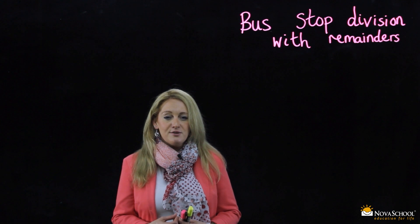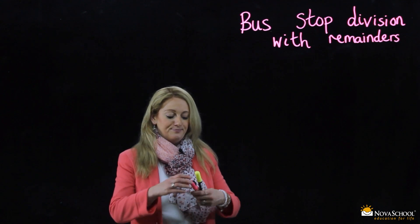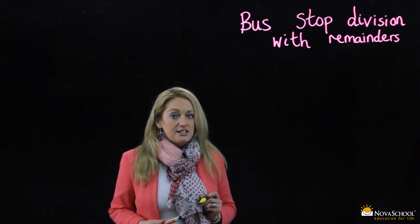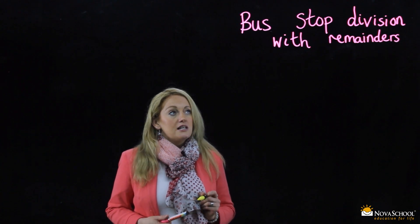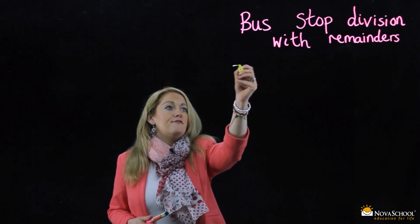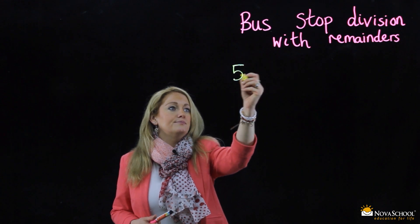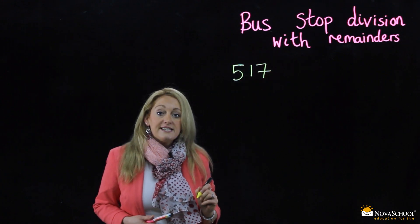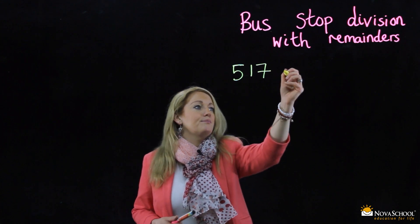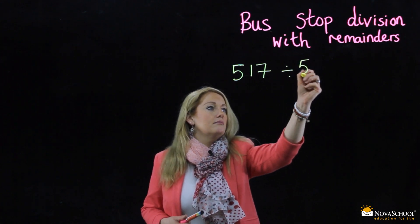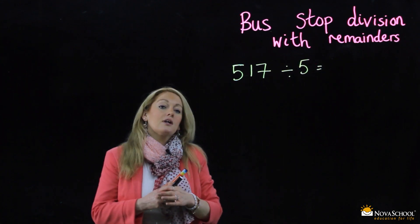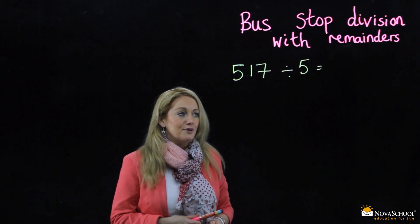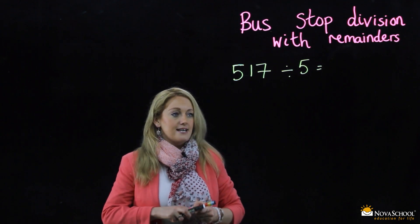Let's write the question out and I will show you the method again. Today we are going to use a three digit number. Let's start with five hundred and seventeen, and we are going to divide by five. Now, let's see if we can remember how to set out the bus stop. We draw the bus stop like this.